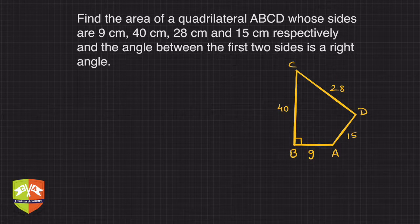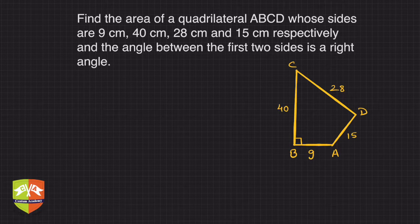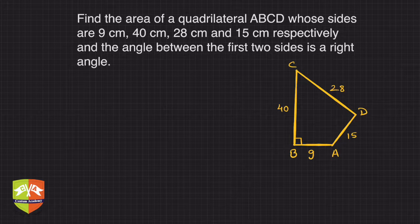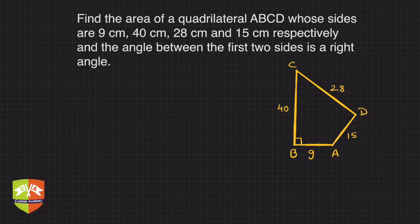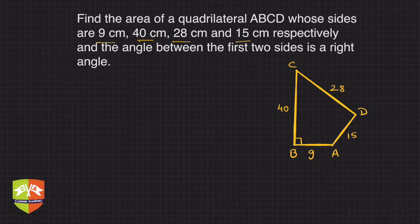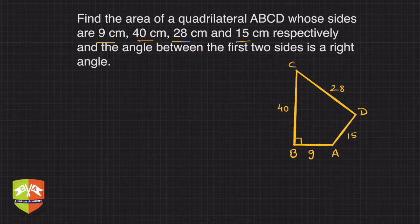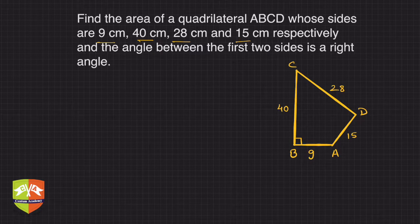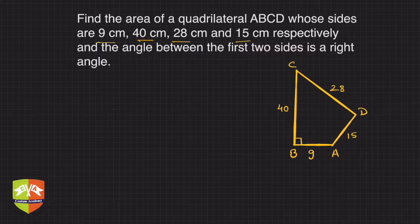In this question, we have been given a quadrilateral ABCD whose sides are 9cm, 40cm, 28cm, and 15cm respectively. The angle between the first two sides is 90 degrees, so we have already drawn the figure. The question is to find the area of this quadrilateral.